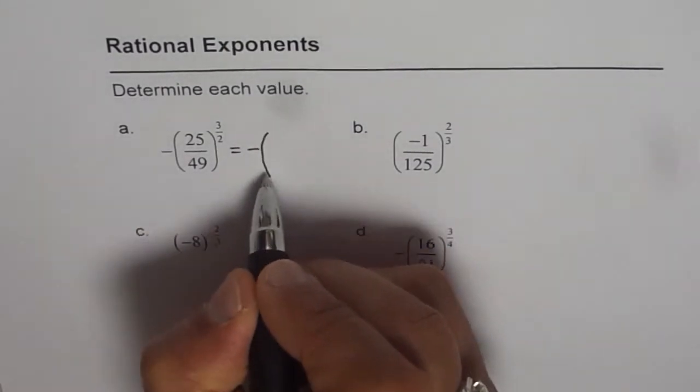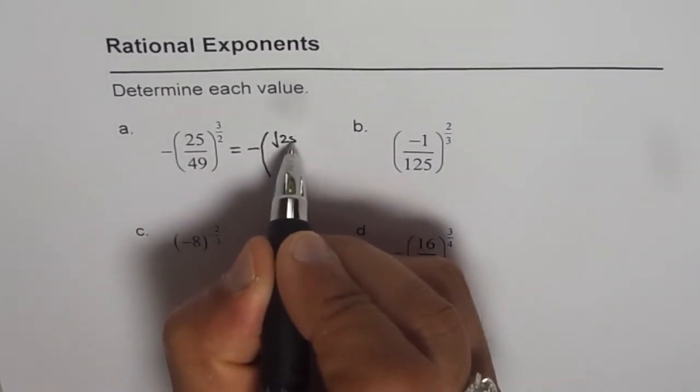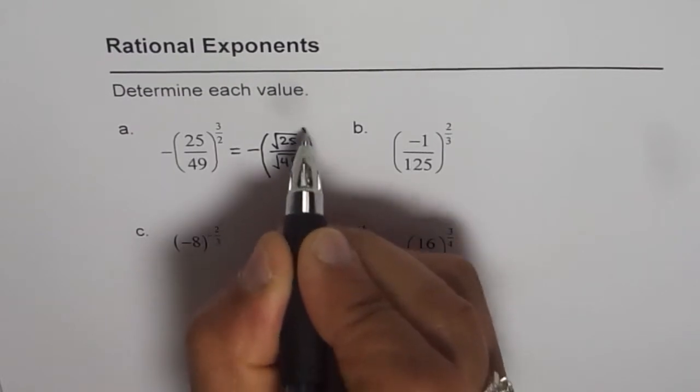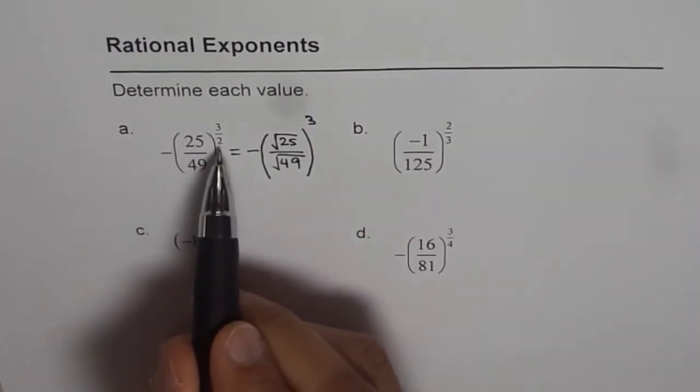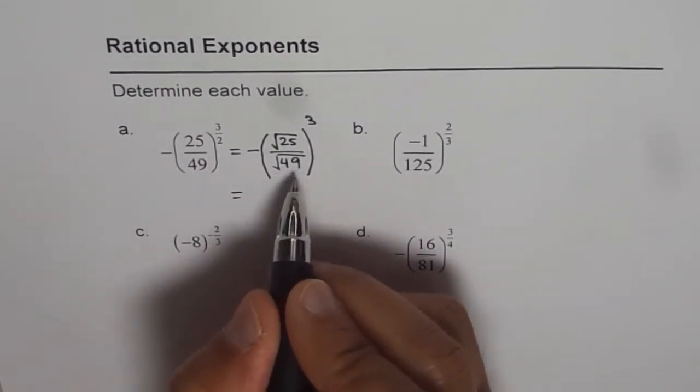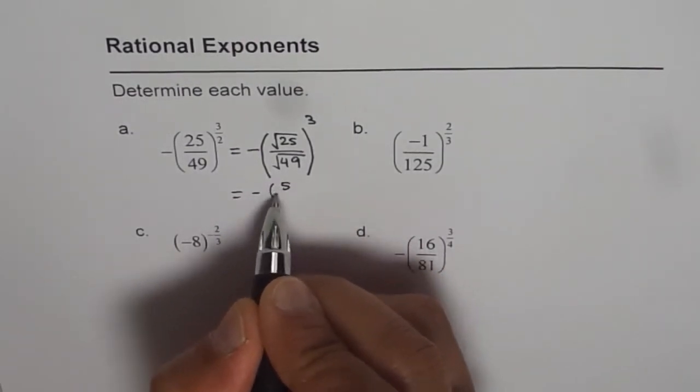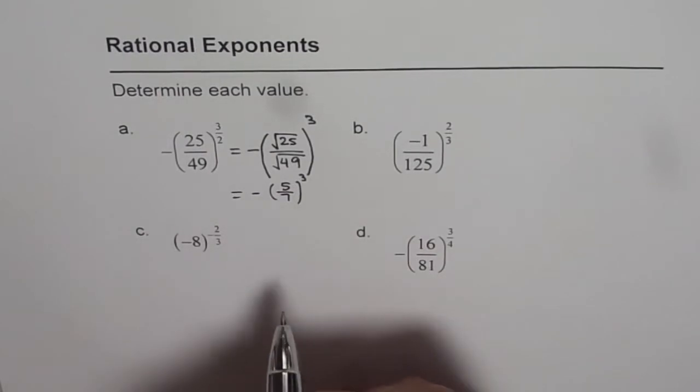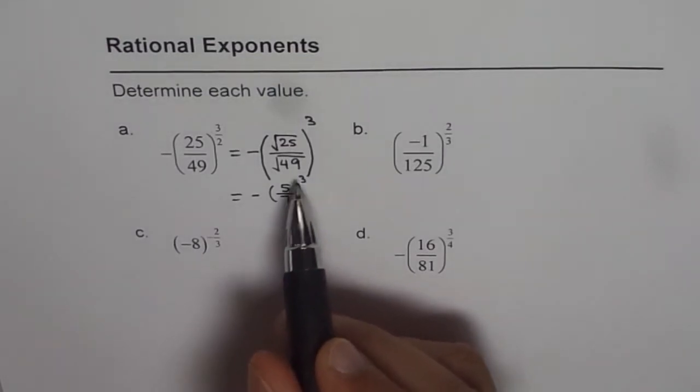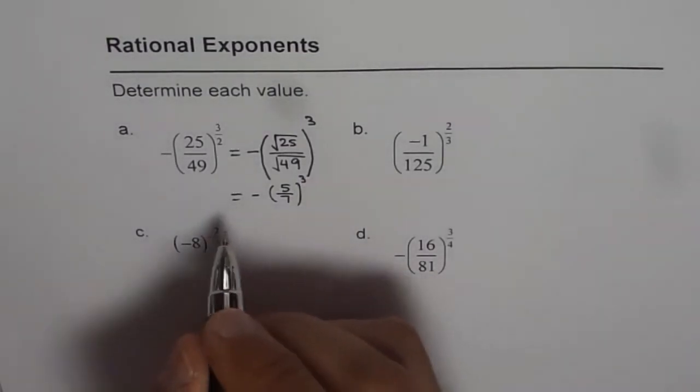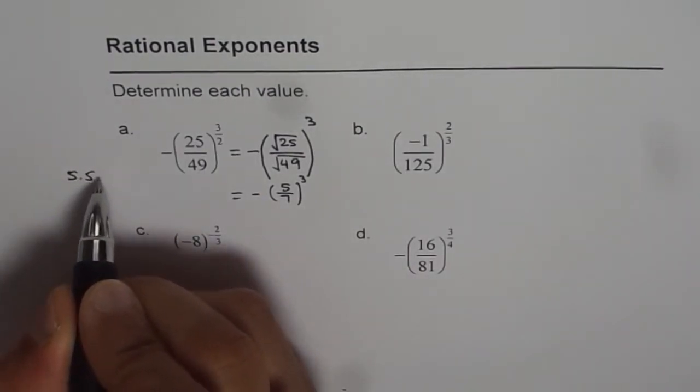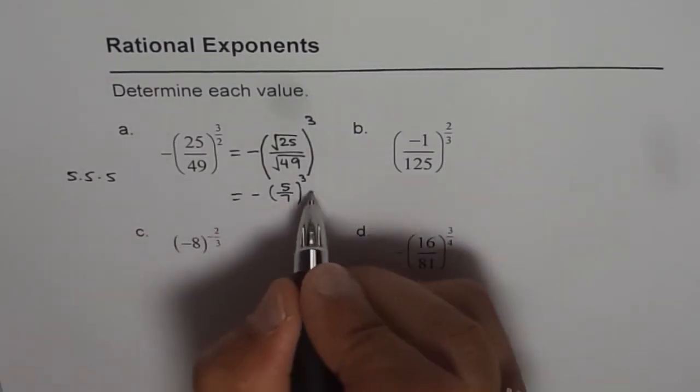That is to say, we should look at them like this. We are trying to do square root first. So it is like square root of 25 divided by square root of 49, and everything cubed. So we are doing square root first. And now we know, square root of 25 is 5 and that of 49 is 7. So we can write this as negative of (5/7) cubed. Now you can use the calculator to find 5 cubed and 7 cubed, which is our answer.